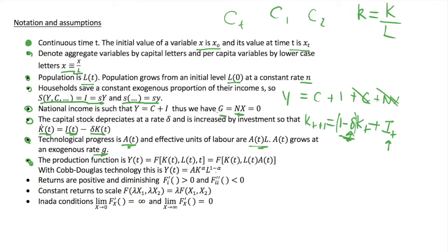We also have a production function where output is a function of capital and labour over time, and this production function also depends on our productivity parameter a. We often use a Cobb-Douglas technology function: output equals a Cobb-Douglas function depending on the technological parameter, capital, and labour, where the inputs of capital and labour are weighted by the parameter alpha.